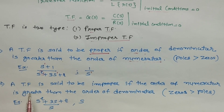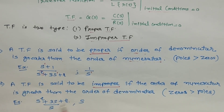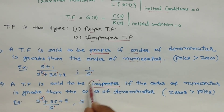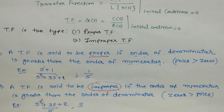A transfer function is said to be improper if the order of the numerator is greater than the order of the denominator. For example, (s² + 3s + 2) / s — here the highest order of s in the numerator is 2, and in the denominator the order of s is 1. Since the order of numerator is greater, this is an improper transfer function. Now we discuss poles and zeros.